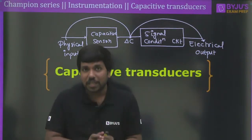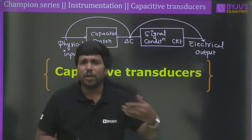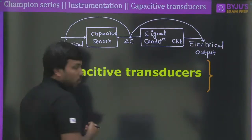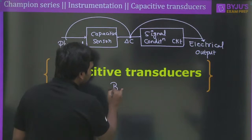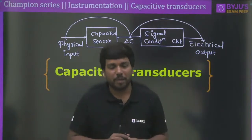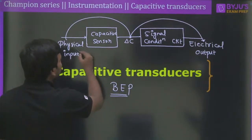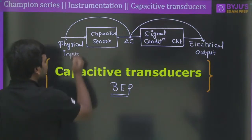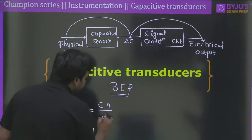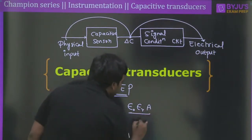Students who are very interested in learning instrumentation deeply can go through all my lectures on the Byju's Exam Prep app. Now, one important thing to understand is the capacitance formula: C = ε₀ · εᵣ · A / D, where the capacitance between two parallel plates depends on the permittivity of the dielectric medium, the area of overlapping of the plates, and the gap between the plates.